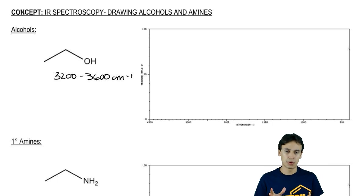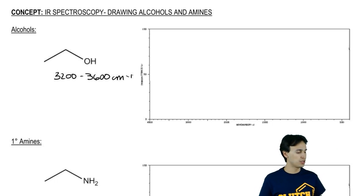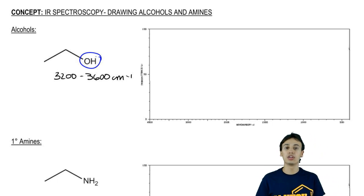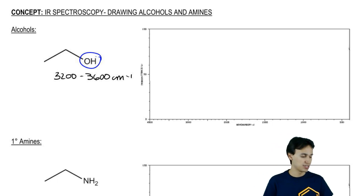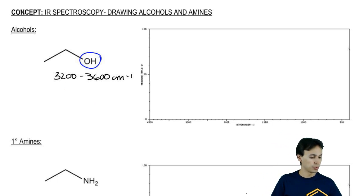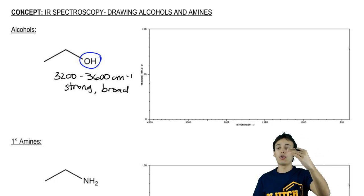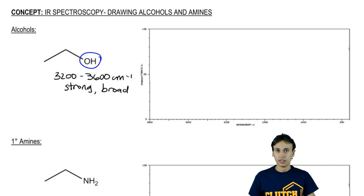This absorption is massive. Remember that an alcohol almost looks like a parabola — that OH is going to look huge. The official name for this type of absorption is that it's strong and broad. Strong means it moves all the way down to the floor, and broad means it's very, very wide.